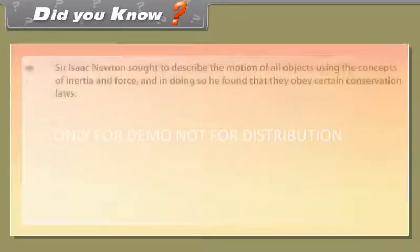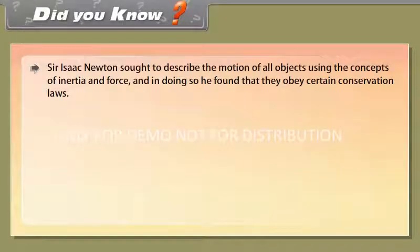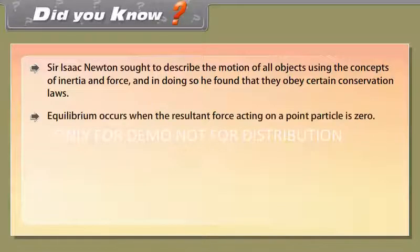Did you know? Sir Isaac Newton sought to describe the motion of all objects using the concepts of inertia and force, and in doing so he found that they obey certain conservation laws. Equilibrium occurs when the resultant force acting on a point particle is zero.